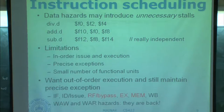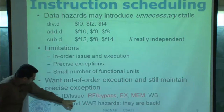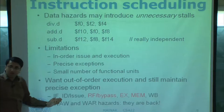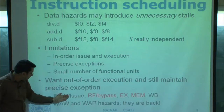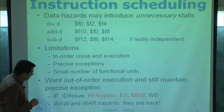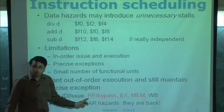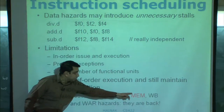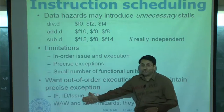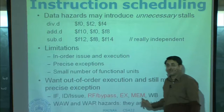I want out-of-order execution and still maintain precise exceptions. This is a very generic pipeline found today. The front end — fetch, decode, and possibly issue — is in order. They fetch instructions in order, decode them in order, and issue them in order, meaning they put the instructions in some queue. Then the middle part of the pipeline is completely out of order — they pick up instructions from the issue queue which are ready and send them to the register file to read values, pick up values from bypass, execute, look up memory, and put the result back somewhere.